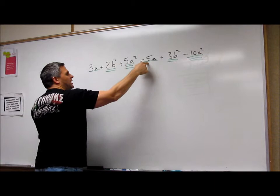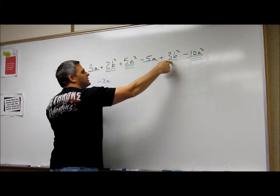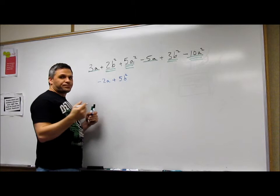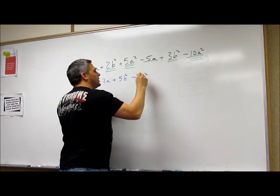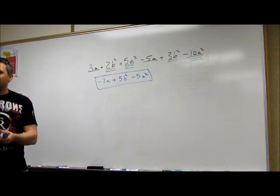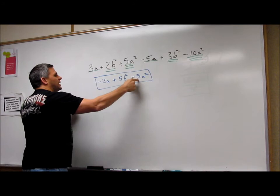So, now I take my a's and I got three minus five is minus two a. And then I have my b's squared. So, two plus three is plus five b squared. And then, finally, my a squared. So, I have five a squared minus ten a squared. And I got minus five a squared. Okay? Now, later, we'll teach you everything's alphabetical order, right? And also, everything's done in degrees. So, next semester, we'll teach you that this one actually goes first. And then the b squared. And then, your single variable.